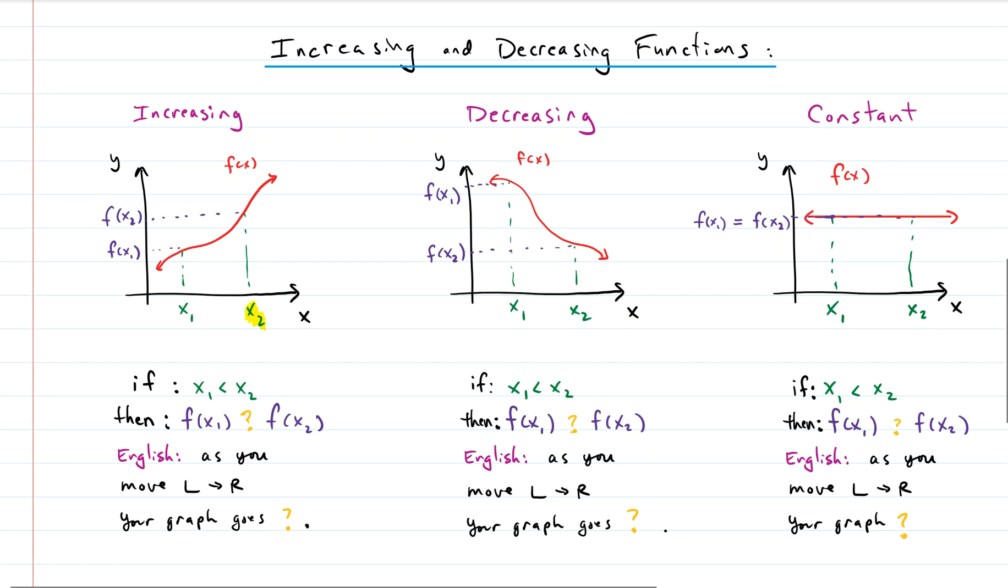Say we have another x value. We're not going to put a solid value on it. We will say though that x1 is less than x2. So that means x2 is to the right of x1. x2 is bigger than x1. That's the only constraint that we have here.